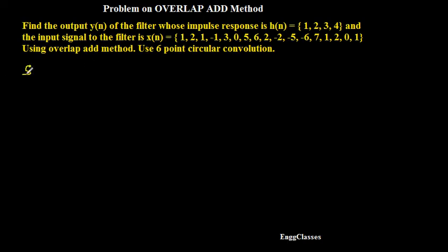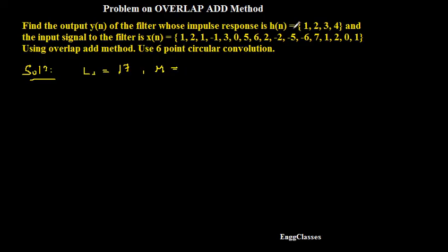Let me begin solving this numerical. First, let me write ls — ls is the length of the input data sequence. Counting the number of samples, I get 17. So ls equals 17. Then I will write m — m is the length of the impulse response h[n]. The length is 4, so m equals 4.